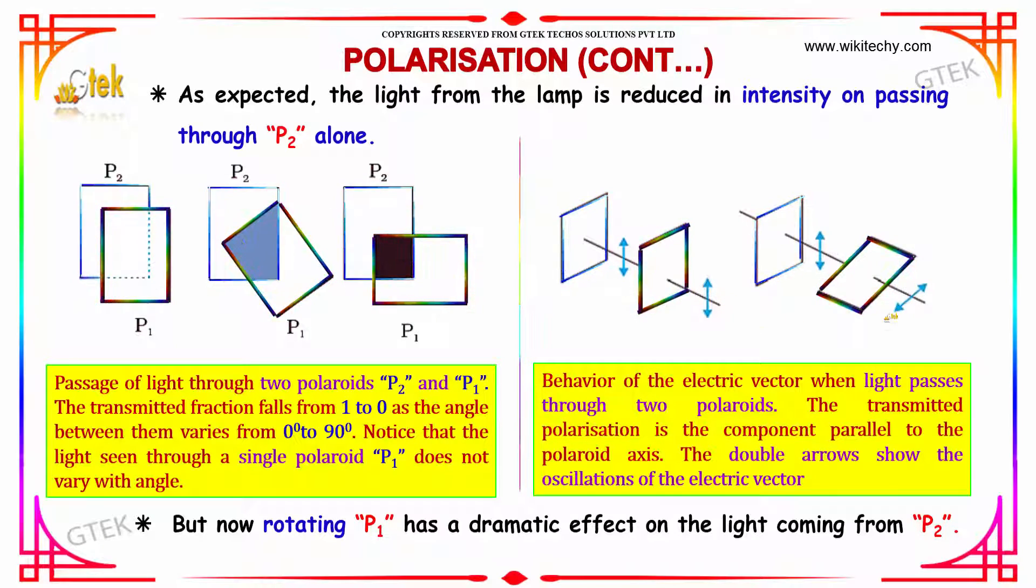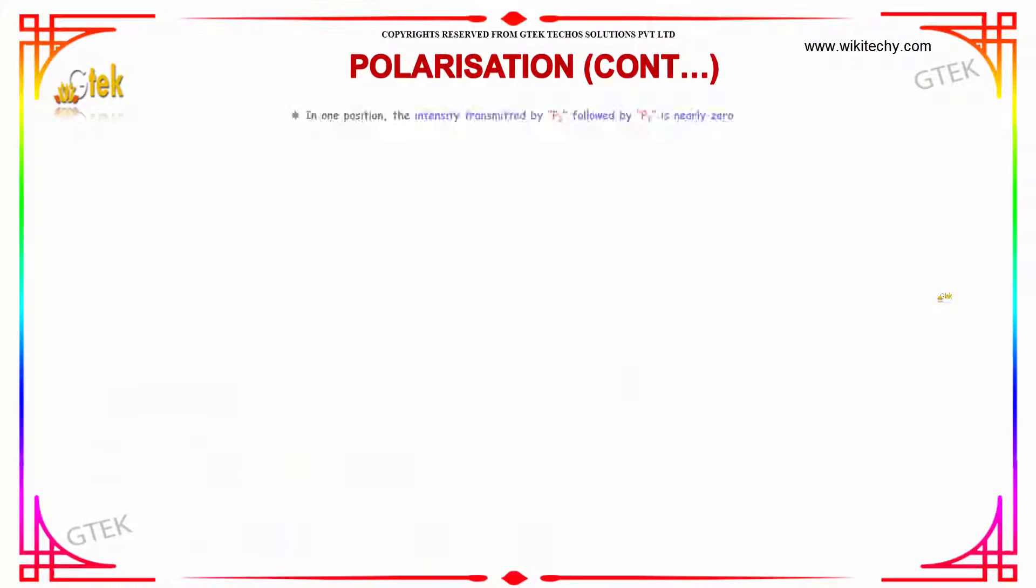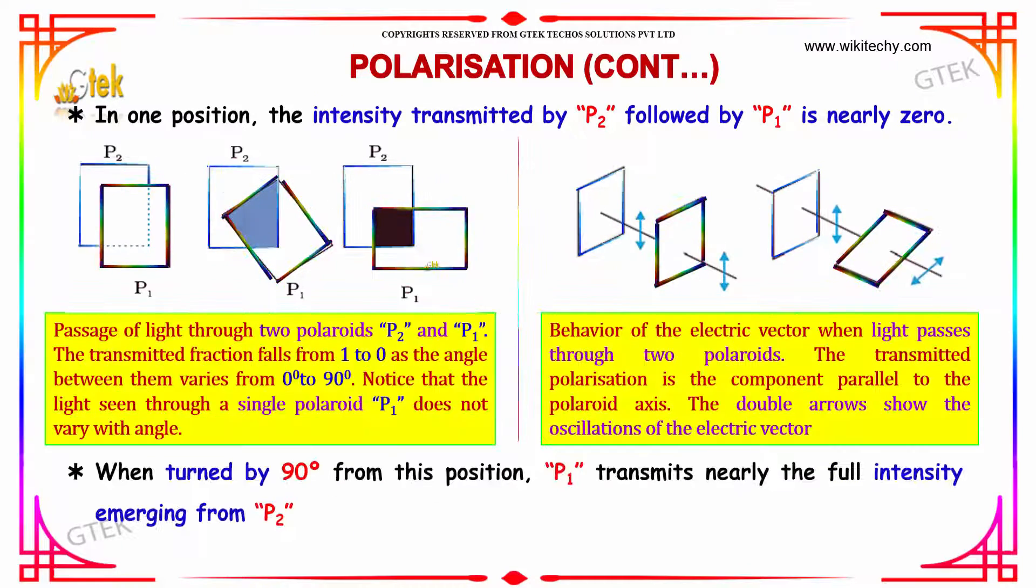Now, rotating P1 has a dramatic effect on the light coming from P2. In one position, the intensity transmitted by P2 followed by P1 nearly becomes 0. When turned by 90 degrees from this position, P1 transmits nearly the full intensity emerging from P2.